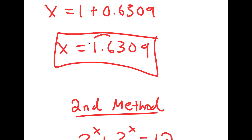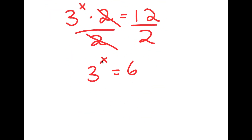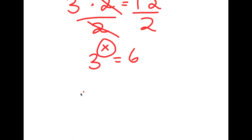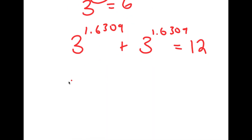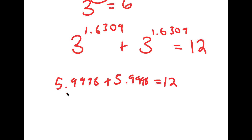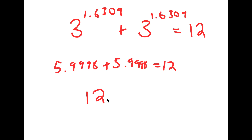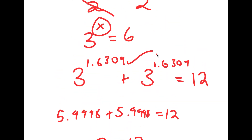Now, remember from before I got x is equal to 1.6309. I'm going to plug this in. So I get 3 to the power of 1.6309 plus 3 to the power of 1.6309 is equal to 12. And 3 to the power of 1.6309 is 5.9998. If I add these two together, I get approximately 12. So I get 12 equals 12, and because this checks out, I know my solution is correct.